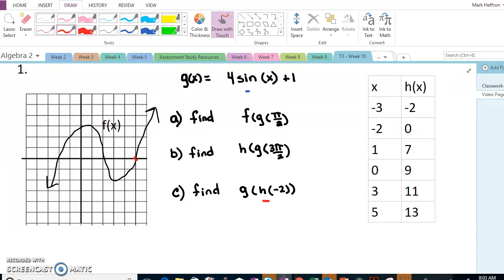The last problem, h is the inner function, so we are going to find when x equals negative 2 in h, here it is. And so h of x, this is the y value, or the output, that's going to equal 0. That 0 is going to go into g.